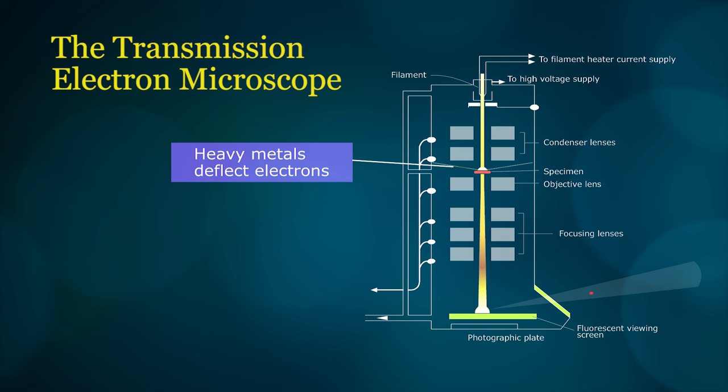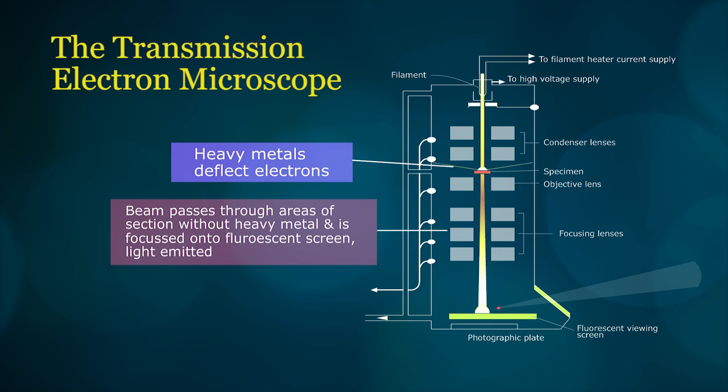Deposits of heavy metals in the sections deflect the electron beam. This area of the tissue will appear black in electron microscopy because no electrons have activated the emission of visible light from the fluorescent screen. These areas are referred to as being electron dense.